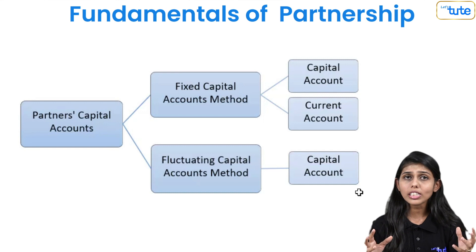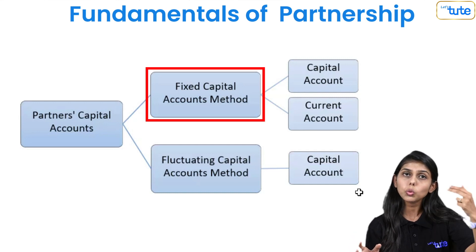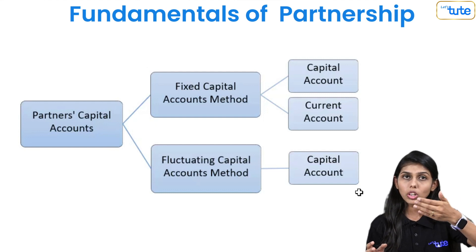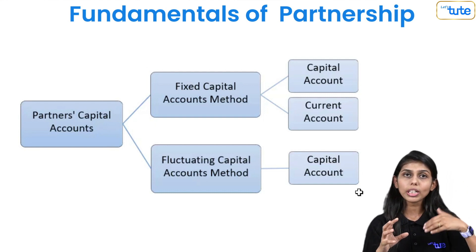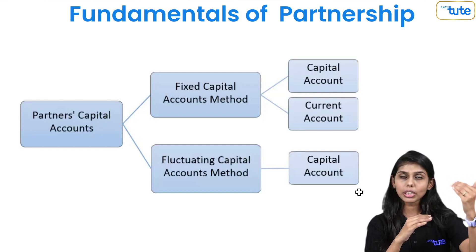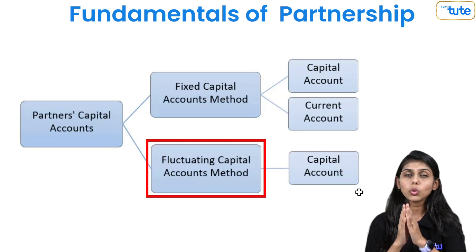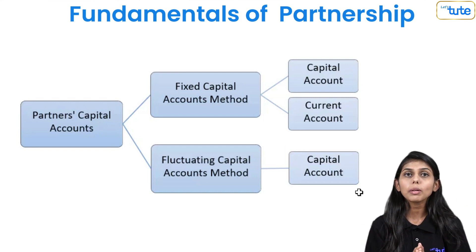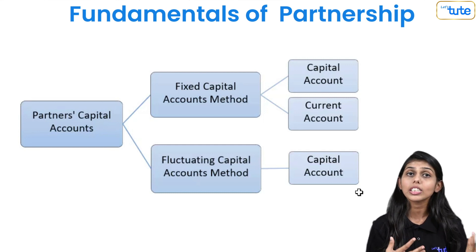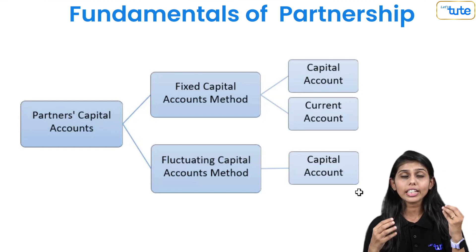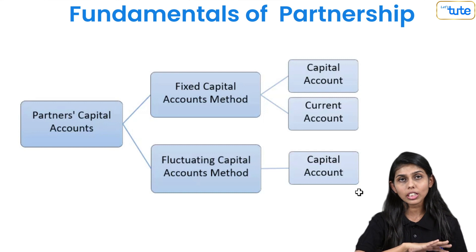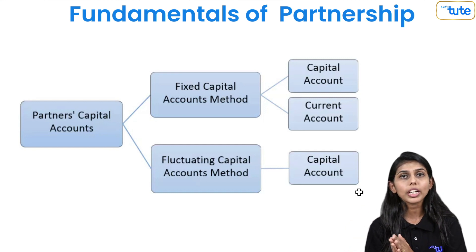To quickly revise: in the fixed capital account method, two accounts are prepared — capital and current. In the capital account we have opening balance of capital, additional capital, or withdrawal of capital. All other partner transactions are posted in the partner's current account, so separate accounts are maintained. In the fluctuating capital method, only one account is maintained and all partner transactions are posted in that one account. This is very important when solving problems — you must know in which account to give the effect. If there is a current account, transactions like interest on capital, interest on drawings, and share of profit or loss are recorded in the partner's current account. If the method is fluctuating, everything is recorded in the partner's capital account.